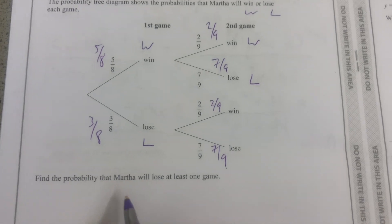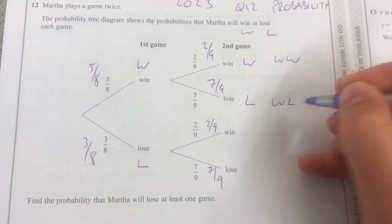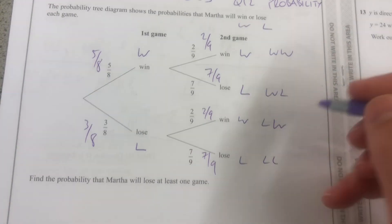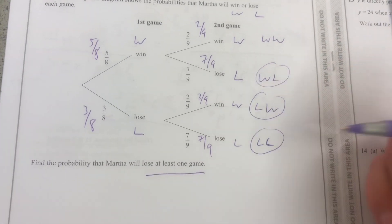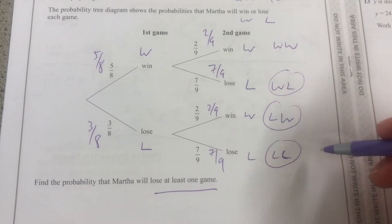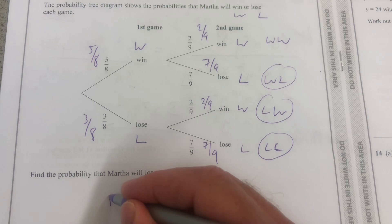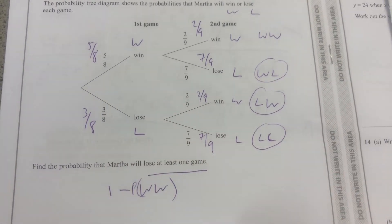We're going to find the probability that Martha will lose at least one game. So this is win-win, win-lose, lose-win, or lose-lose. Lose at least one game is all those three options. I could work out those probabilities and then add them, or I could take away from one the probability that she wins both. So I'm going to choose to do that.